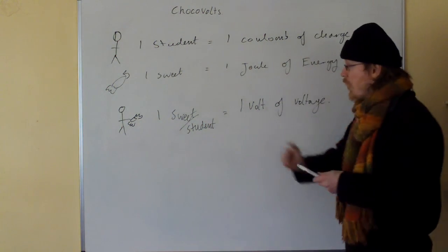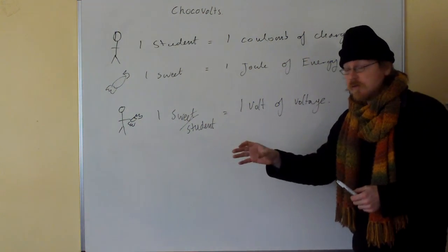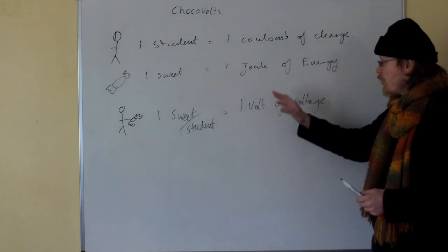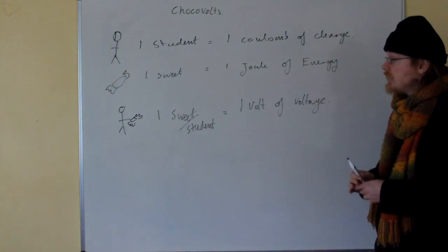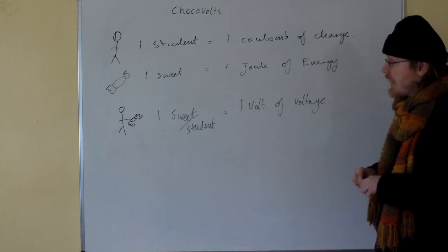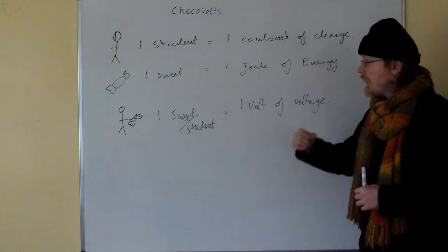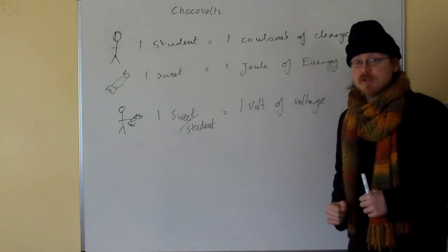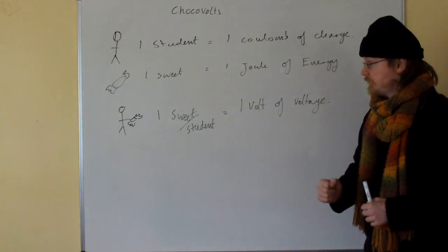One suite per student equals one volt of voltage. So if you have two suites per student, you have two volts. If you have ten suites per student, you have ten volts.